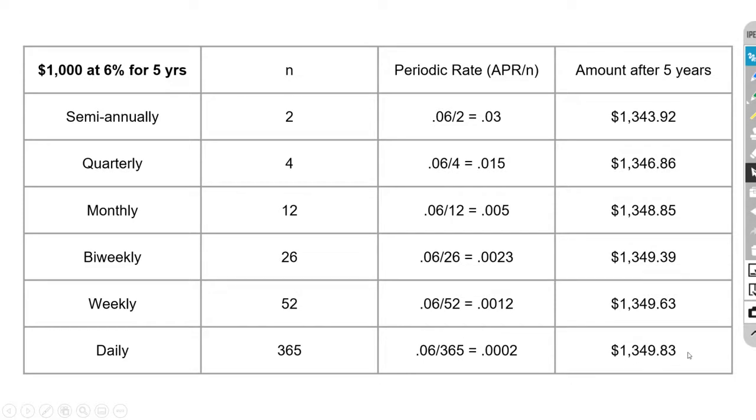As you can see, the account that is only compounded two times earns less than the account that is compounded daily. Now one thing to notice about this is that it does start to level off a little bit in terms of how much it's increasing each time. There does seem to be a limit or a cap to how much we can actually earn in this scenario. I will talk a little bit more about that in a different video.